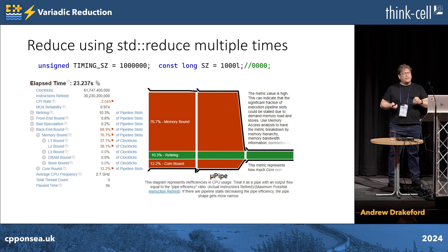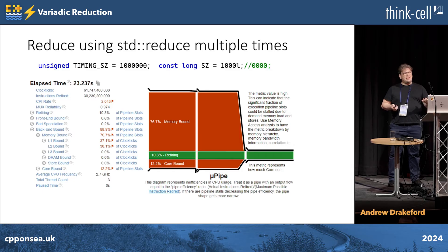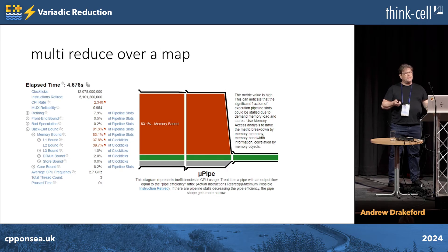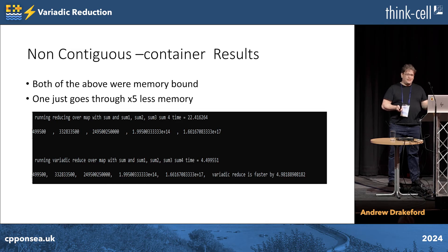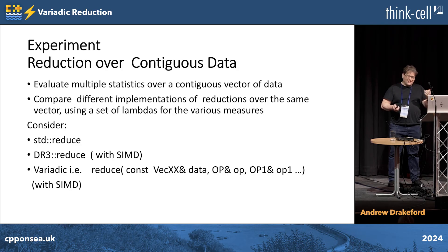Looking at performance characterization with VTune, the std.reduce version is 80% memory bound. When we do the multi-reduce, it's also 80%. So if you only go through data once rather than five times when you're memory bound, you go five times faster. It's not particularly clever, but it is clever — you go five times faster.